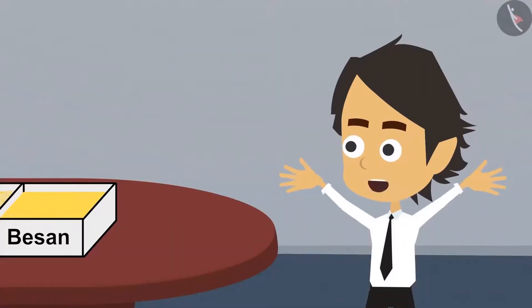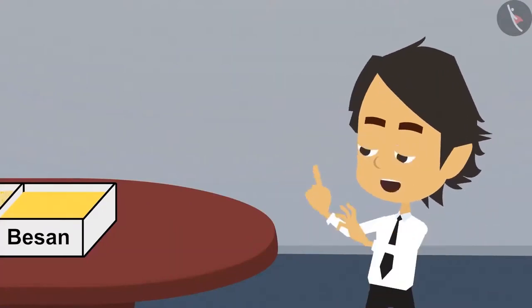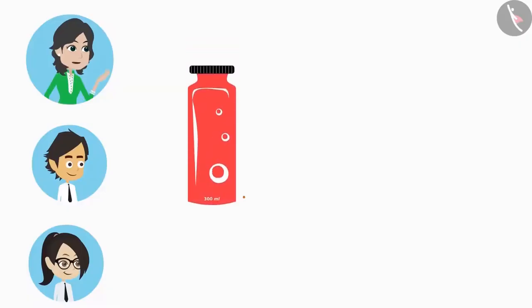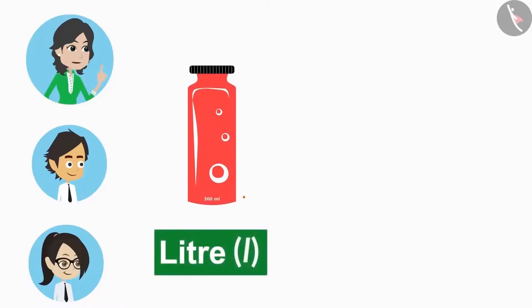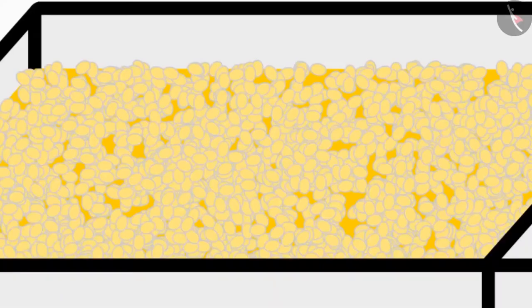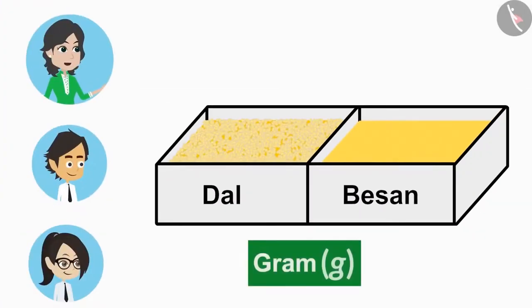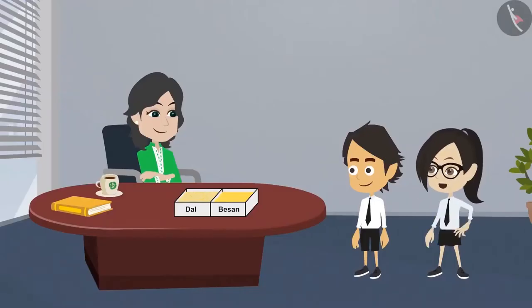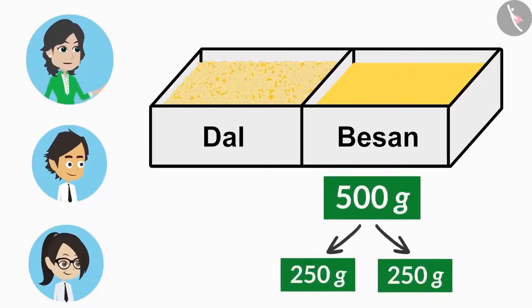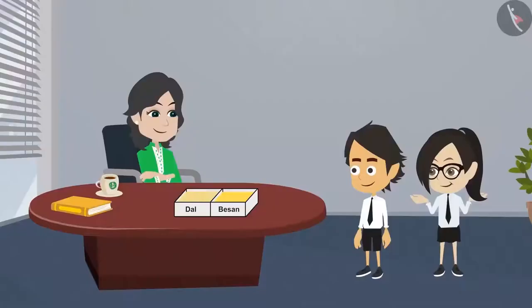We can neither cut nor count it, and unlike liquid we cannot measure besan. So how do we divide besan? Just like we use liters to measure liquid, we use grams to measure solid objects. Objects like dal which are not easy to count, and objects like besan that cannot be counted, are measured in grams. This means after measuring besan in grams, we can divide it into two halves. Yes, if you have 500 grams of besan, then you can divide it into 250 grams each. But madam, how do we measure objects in grams?